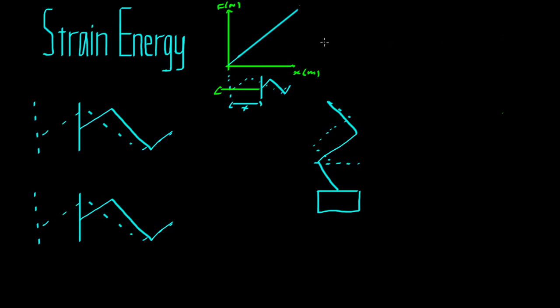So it can be described by a simple law: f is equal to k, a constant—that's the gradient there—multiplied by x. And this is known as Hooke's law.